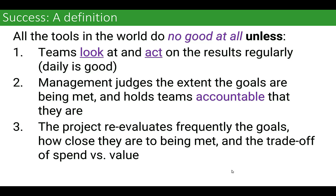The bigger and more complicated your system gets, the more moving parts it has, the more instances it has, the more tenants it has — the more important observability becomes. Otherwise, what you have is a ginormous, very expensive mojo box. And you may be spending ballistic amounts of money you don't have to.